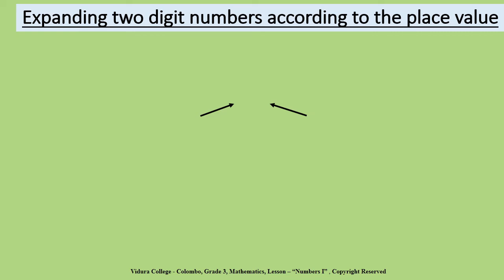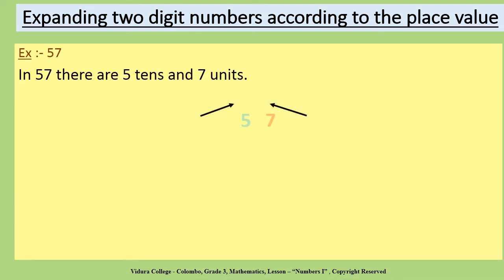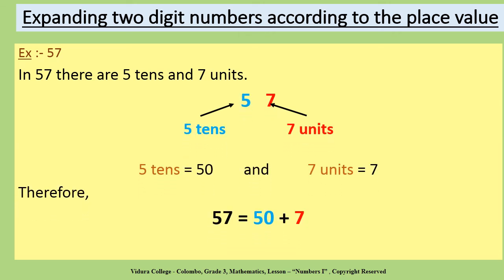Children, let's learn how to expand a two-digit number according to the place value. Look at the example. In 57, there are five tens and seven units. Five tens equal 50, and seven units equal 7. Therefore, when you expand number 57, the answer is 50 plus 7.